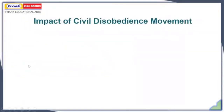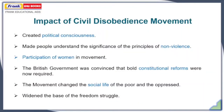The impacts of the Civil Disobedience Movement were significant. It created political consciousness among Indian people and spread the feeling of Purna Swaraj. It made people understand the significance of the principle of nonviolence. It was also known for the participation of women in the movement. The British government was convinced that bold constitutional reforms were now required. The movement changed the social life of the poor and the oppressed, and widened the base of the freedom struggle as people from many sections joined it. The movement concluded with a pact named the Gandhi-Irwin Pact, signed between Gandhiji and the then-Viceroy of India, Lord Irwin.